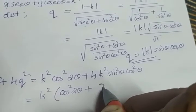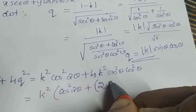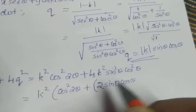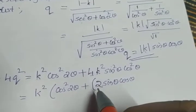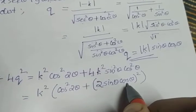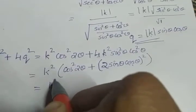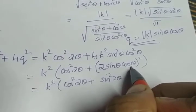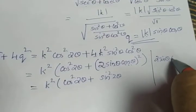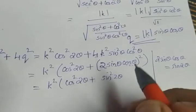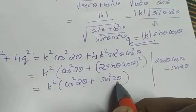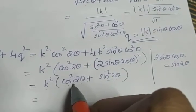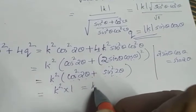We can write 4sin²θ cos²θ as (2sinθ cosθ)². And 2sinθ cosθ = sin2θ. So the expression becomes K²(cos²2θ + sin²2θ). The bracketed term is of the form sin²θ + cos²θ = 1. So we get K² · 1 = K².